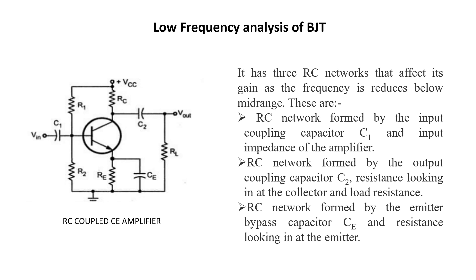Therefore, the coupling capacitors will offer a very low reactance in mid and high frequency region and they can be replaced by short circuit. So they do not have any effect at medium and high frequencies. At low frequencies, the reactance of the coupling capacitor will be large. Due to this, the voltage drop across them increases with reduction in frequency. This increased voltage drop will reduce both the output voltage and gain of the amplifier in the low frequency region of the frequency response.